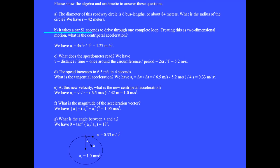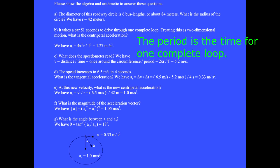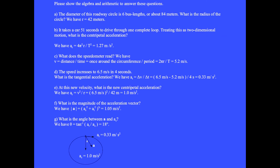Question B: It takes a car 51 seconds to drive through one complete loop. Treating this as a two-dimensional motion, what is the centripetal acceleration? We have a sub c equals 4 pi squared r over the period squared, and we get 1.27 meters per second squared. Passengers feel thrown outward away from the center of the circle. The period is the time for one complete loop, which is 51 seconds. Question C: What does the speedometer read? Velocity v equals distance divided by time. When the distance is once around the circumference, then the time is one period, so we have 2 pi r divided by T equals 5.2 meters per second.